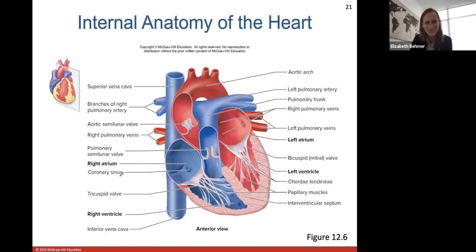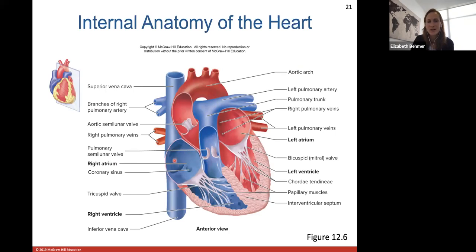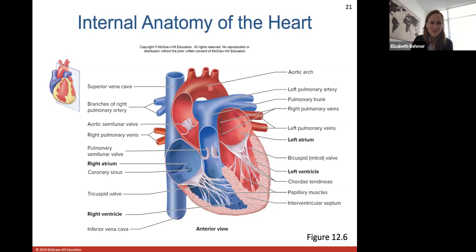Looking at the internal anatomy of the heart, you can see the chambers more clearly. The superior and inferior vena cava and coronary sinus all bring deoxygenated blood into the right atrium. Blood then flows into the right ventricle, out through the pulmonary trunk and pulmonary arteries to the lungs to get oxygen. Blood returns into the left atrium with oxygen, down into the left ventricle, and then oxygenated blood gets pumped out through the aortic arch to all parts of the body.